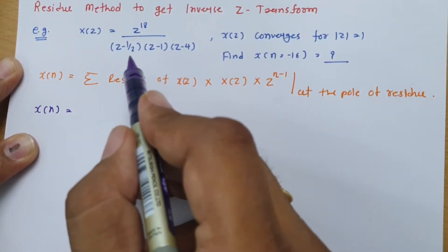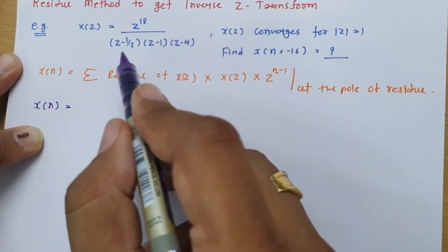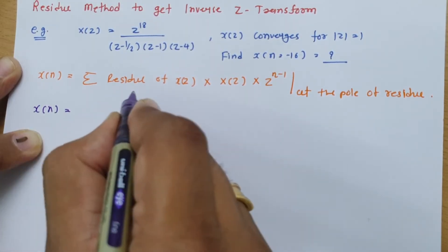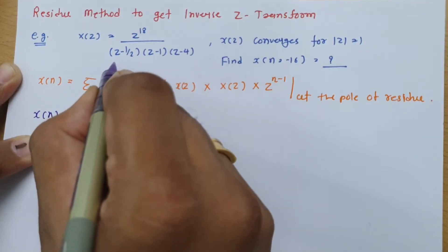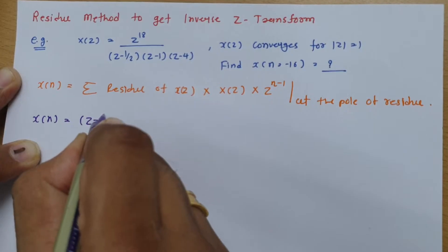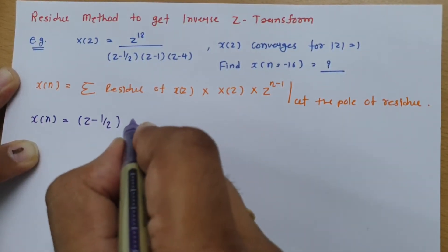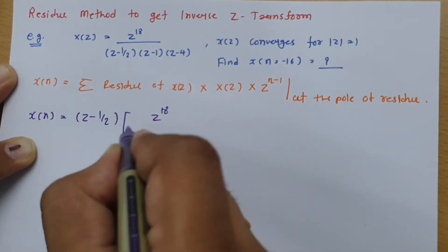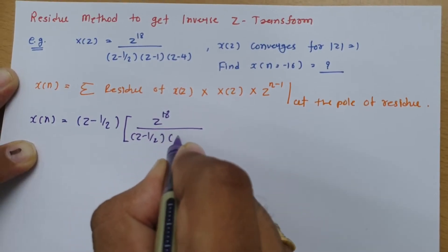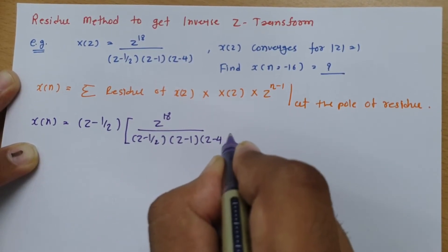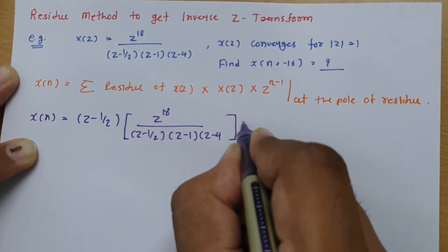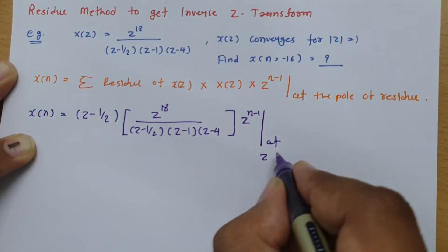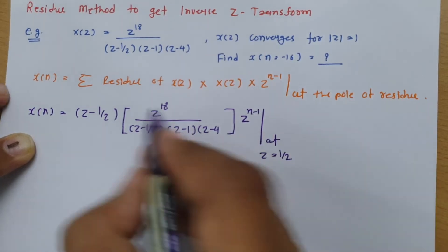The first pole occurs at Z minus half. For the first residue I write: (Z minus half) multiplied by X of Z, which is Z to the power 18 divided by (Z minus half)(Z minus 1)(Z minus 4), multiplied by Z to the power (N minus 1), evaluated at Z equals one-half.